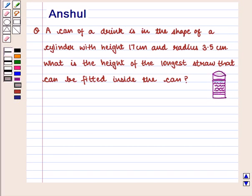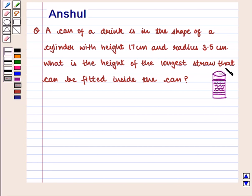Hello and welcome to the session. In this session, we are going to discuss the following question: A can of a drink is in the shape of a cylinder with height 17 cm and radius 3.5 cm. What is the height of the longest straw that can be fitted inside the can?